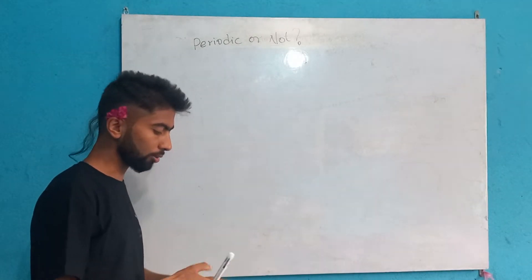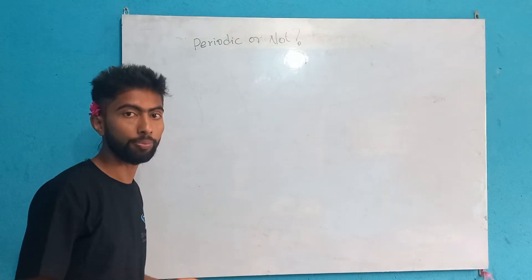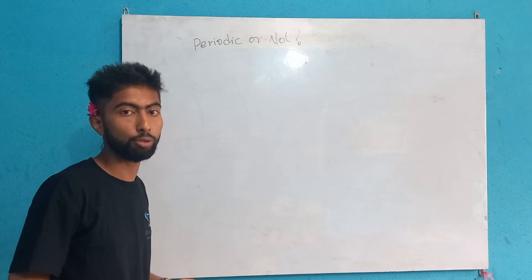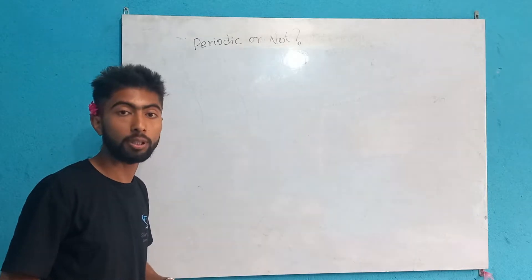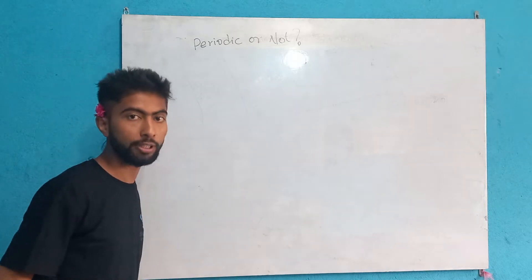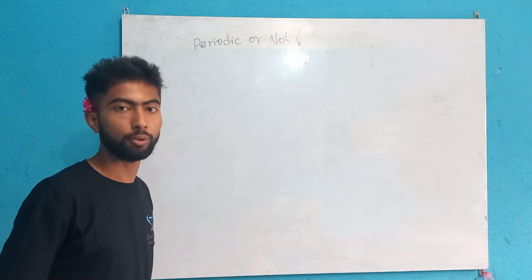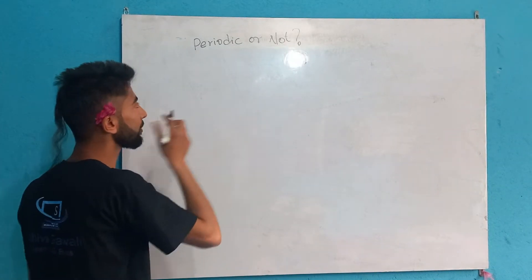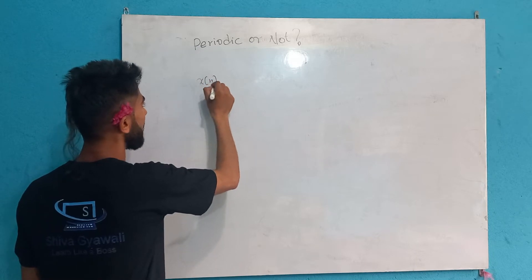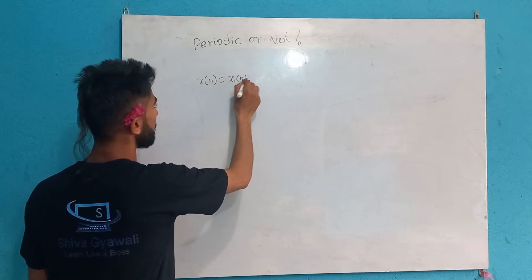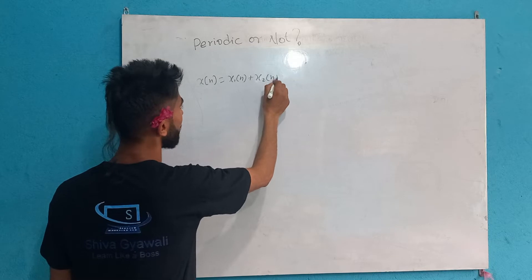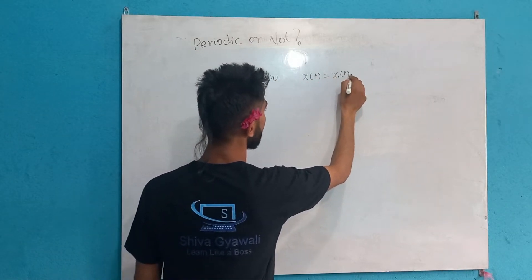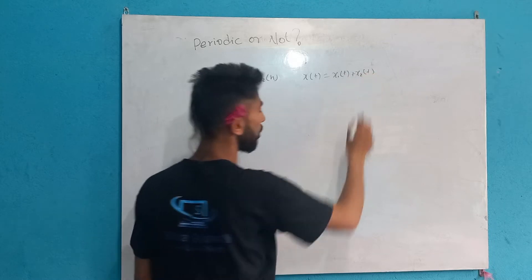Let's talk about what periodic means. For example, the sine wave or square wave in continuous time domain is periodic with fundamental period 1 by 2. Suppose x(t) equals x1(t) plus x2(t). This is the case we will examine.